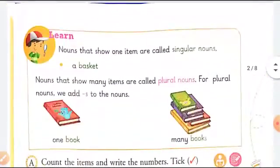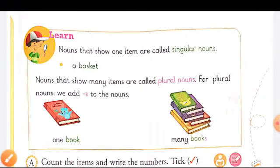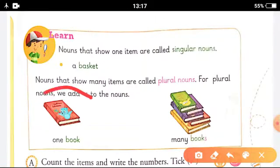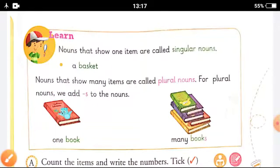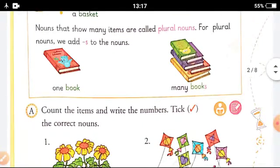Now, nouns that show one item are called singular nouns. A book - it's one. See children, in this picture there is only one book. Nouns that show many items are called plural nouns. For plural nouns we add 's' to the noun.